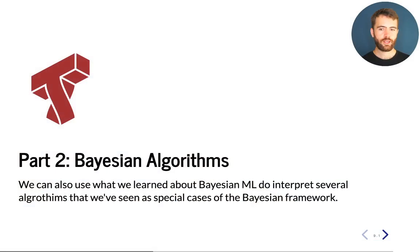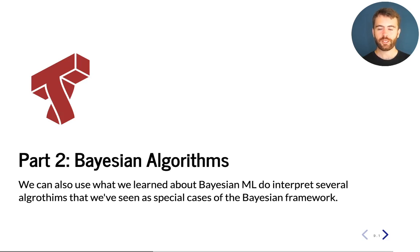This is part two of lecture 5b of Applied Machine Learning. In this lecture, I would like to continue our discussion of the probabilistic approach to machine learning. In this part of the lecture, I want to focus on the Bayesian approach to learning, and give you an example of a machine learning algorithm that we've seen before that can be derived from a Bayesian perspective.